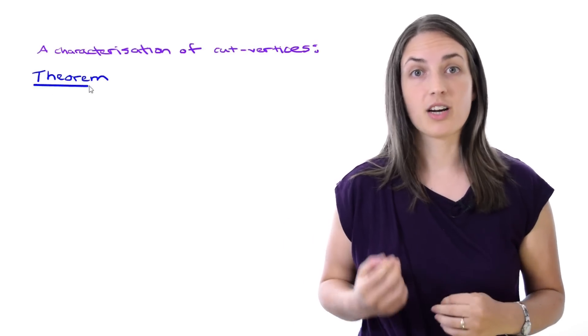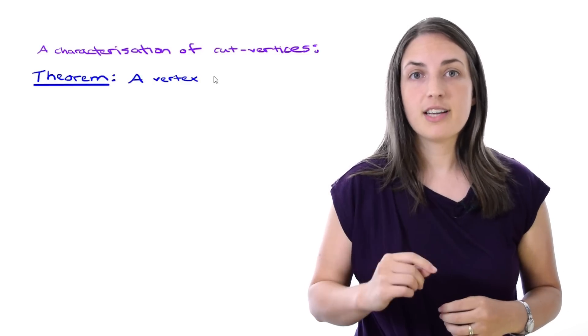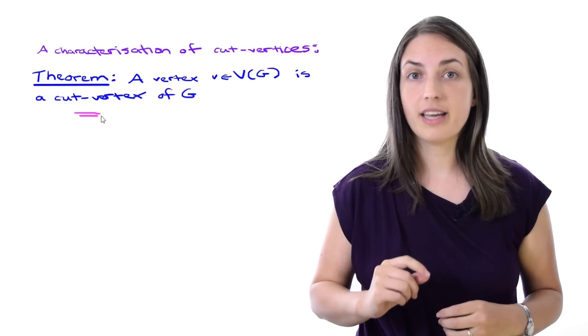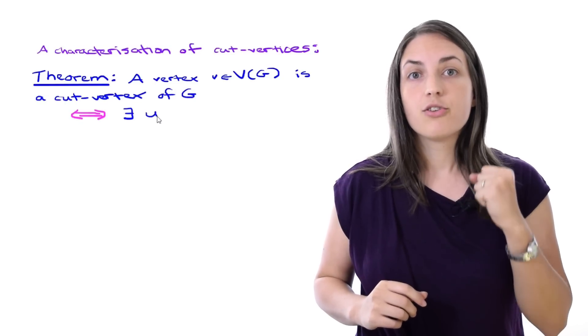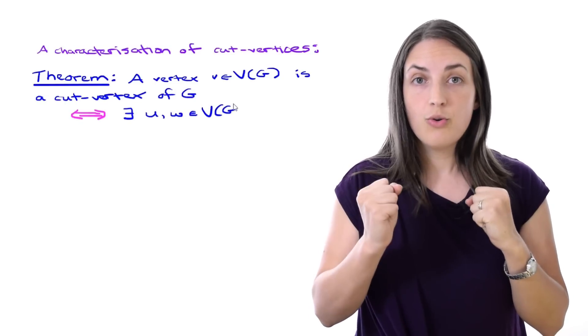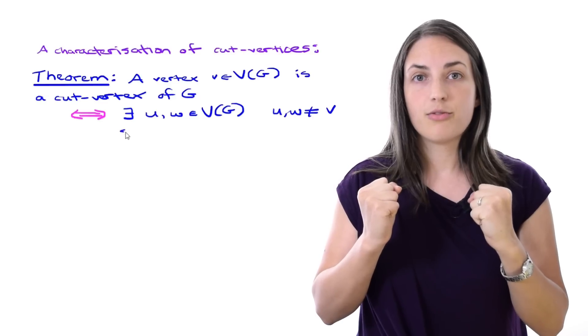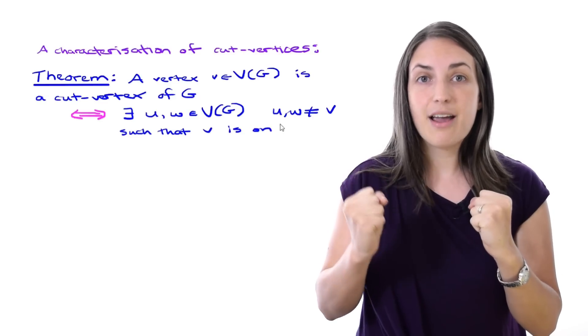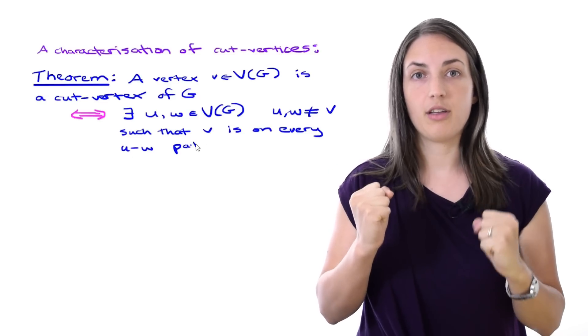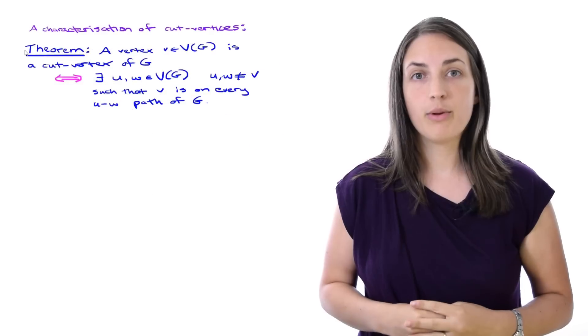Now that we're familiar with cut vertices, we can talk about a characterization of what makes a vertex a cut vertex. We're going to prove this theorem: a vertex in a graph is a cut vertex if and only if there exists two more vertices, U and W, such that our vertex V lies on every U, W path in the graph. So how will we prove this?